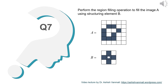The question here is to perform the region filling operation to fill the image A using structuring element B. If you observe this image, the grey boxes indicate the value 1 or the white region, and the white boxes indicate the value 0. The structuring element is a 3x3 element with the center marked by a small circle at the second row, second column. It has value 1 at the center and the 4 neighbors are 1, whereas the diagonal neighbors are 0.